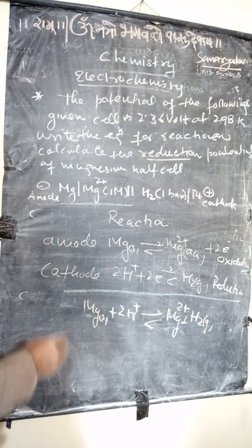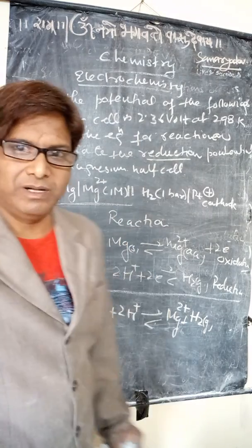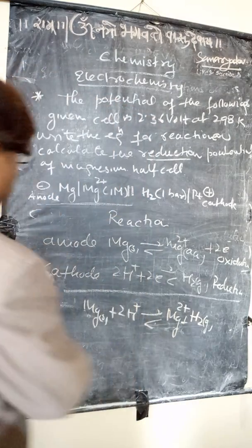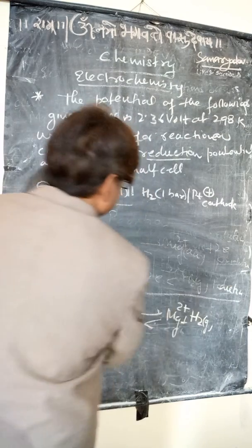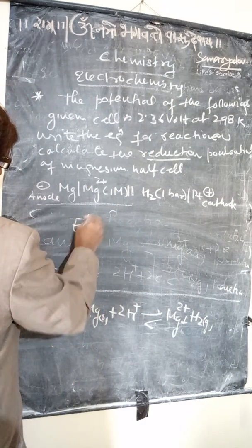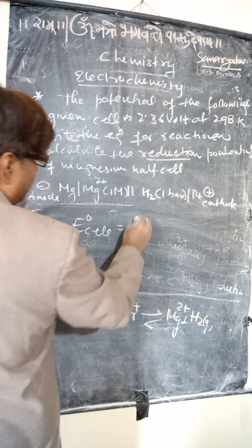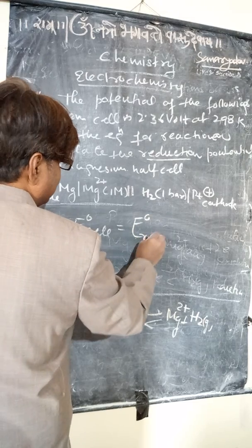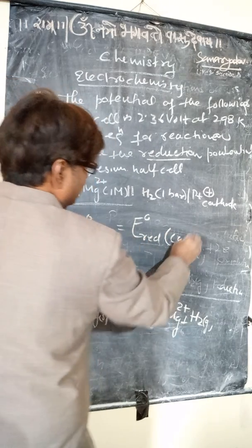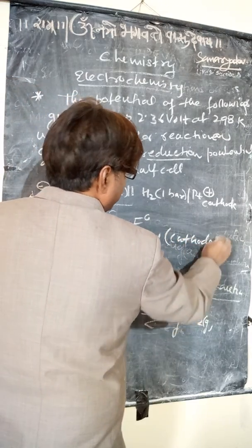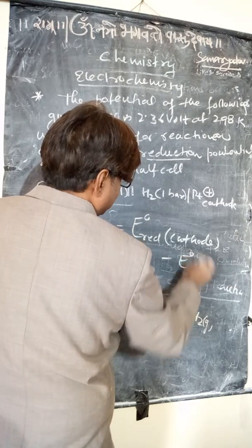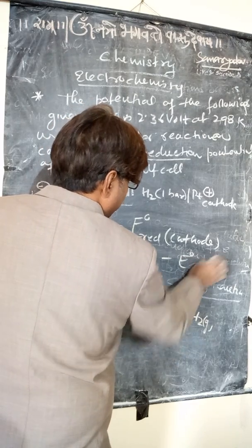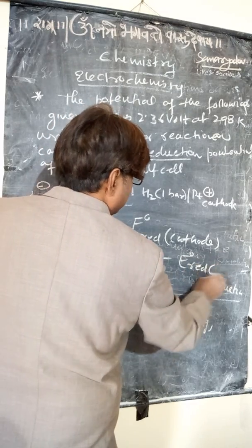Now for the reduction potential of the cell, the standard cell potential equals the standard reduction potential of the cathode minus E° of the anode.